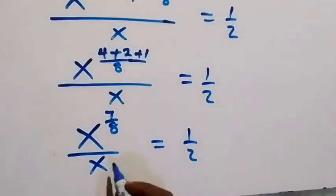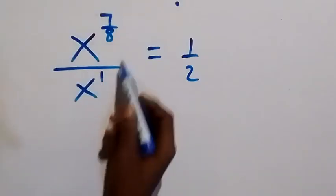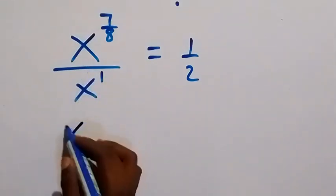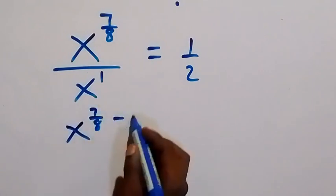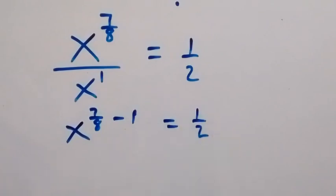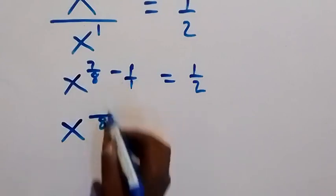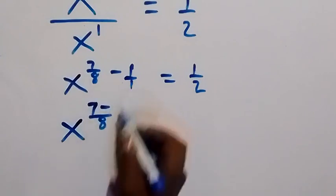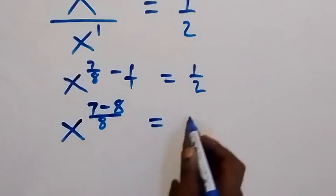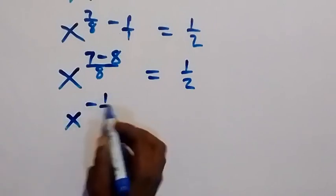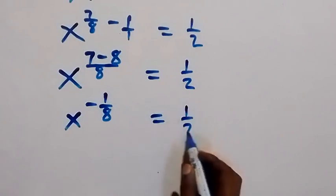We can write x as x raised to power one. When we apply the law of indices, since we are dividing with the same base, we subtract the exponents. So we write x raised to power seven over eight minus one equals one over two. Using LCM of 8: seven over eight minus one gives us seven minus eight over eight, which equals negative one over eight. So x raised to power negative one over eight equals one over two.